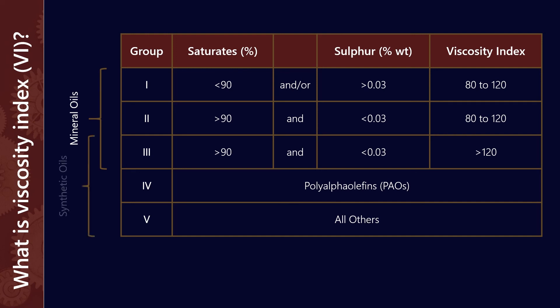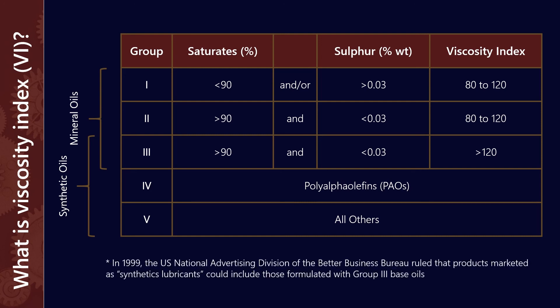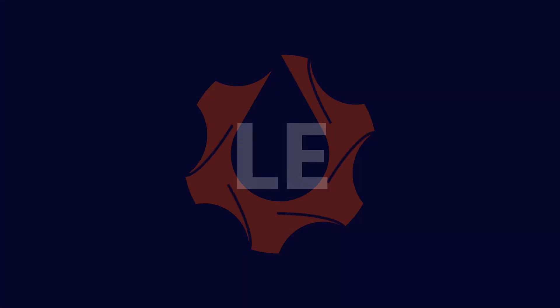Of course, synthetics for marketing purposes can sometimes be a Group 3, so that's something to be wary of — and that's due to a 1999 legal decision. Especially in passenger vehicles, the term 'synthetic' is more of a marketing term rather than a description of how the product was made. So hopefully that's been helpful to explain the very simple concept of VI. This has been Lubrication Explained.